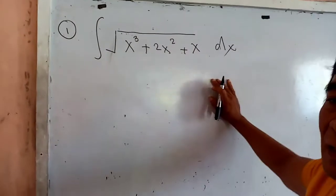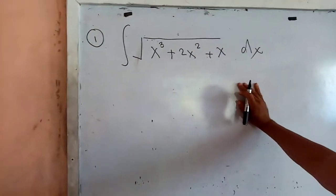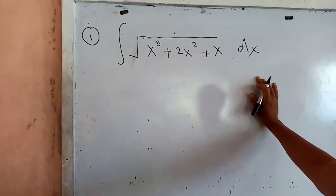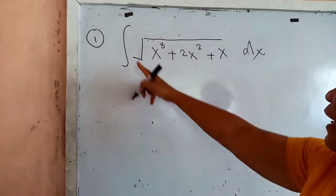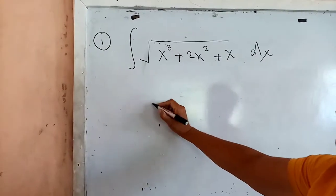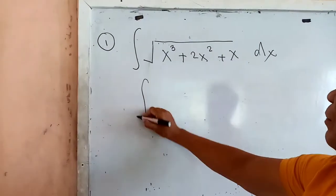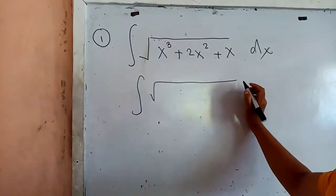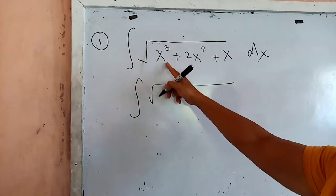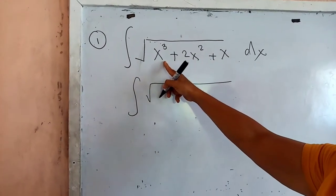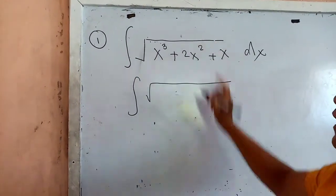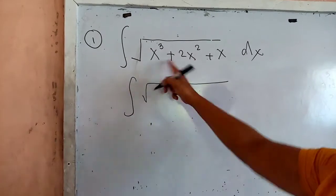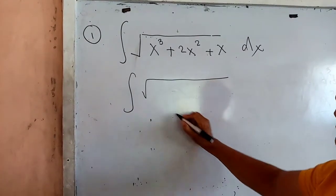Okay class, we will discuss the solution of your assignment — the integration of the square root expression. Note that the equation inside the radical is factorable, where x is a common monomial factor.